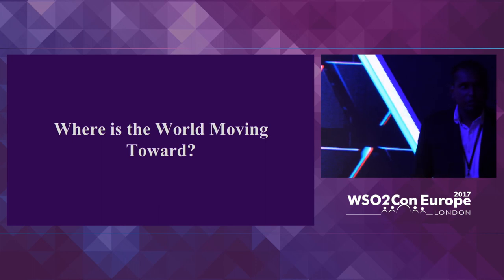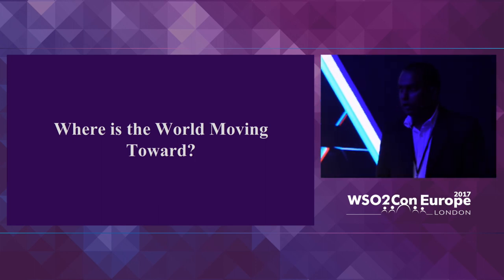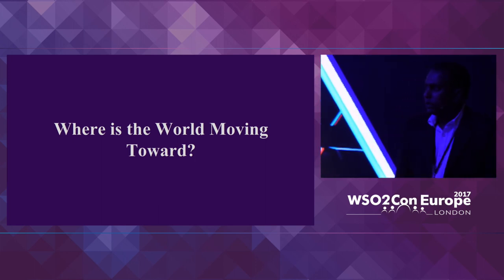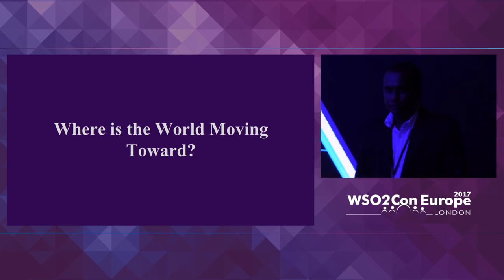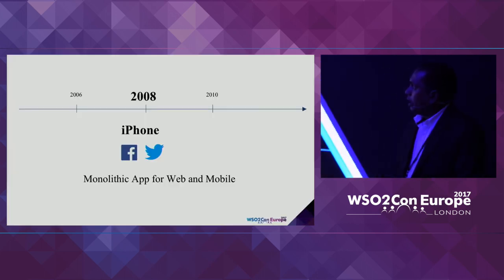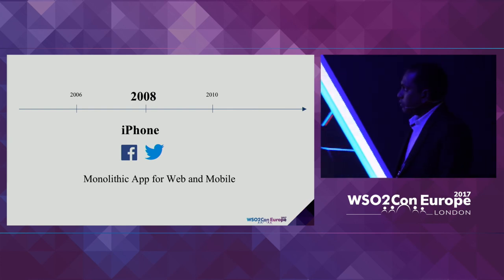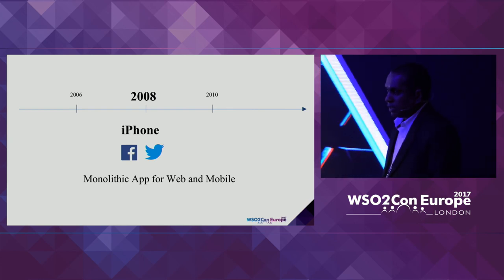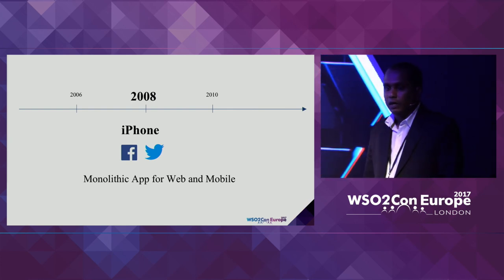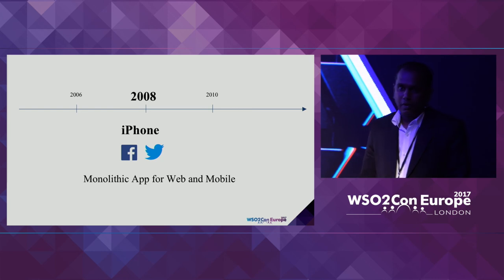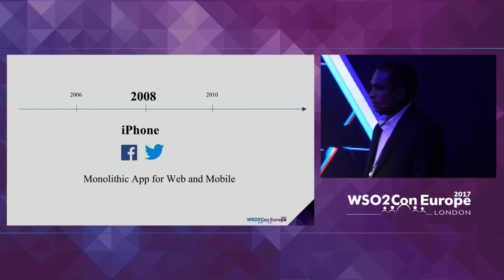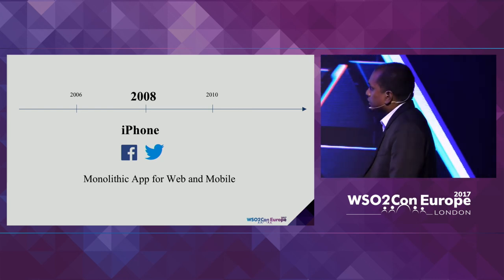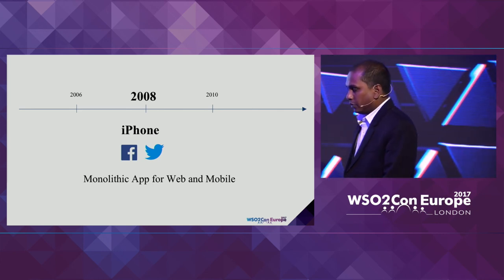Before going into the microservice architecture and the API gateway, let's try to look at where the world's moving toward. In 2007 or 2008, iPhone was introduced. And in the same era, Facebook and Twitter became very popular.